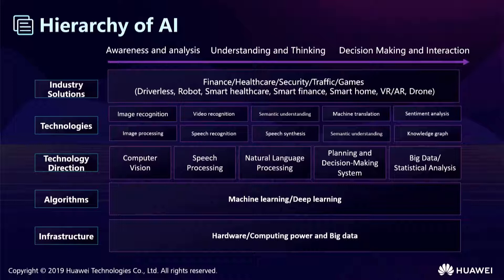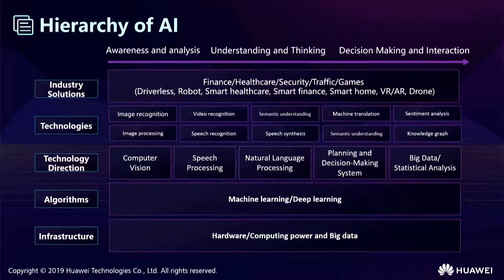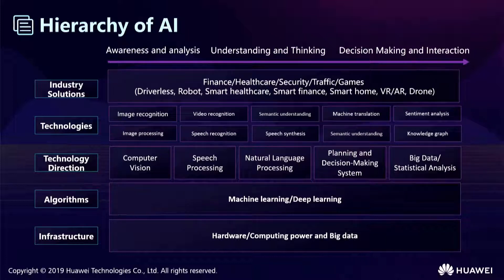As a result, deep learning came into being, pushing AI to a new height. Mass training data is an important driving force for the development of AI. The second layer is the algorithms layer. Machine learning uses algorithms to teach computers to obtain information from data like human beings. Deep learning, as a subset of machine learning, uses more parameters and complex models. This enables models to be more intelligent and to better understand the data. The upper layer is technology directions: computer vision, speech processing, natural language processing, planning and decision-making systems, and big data statistical analysis.